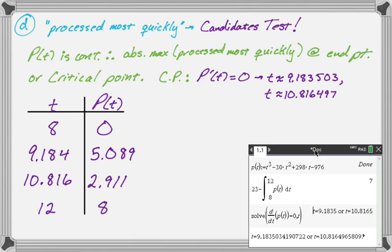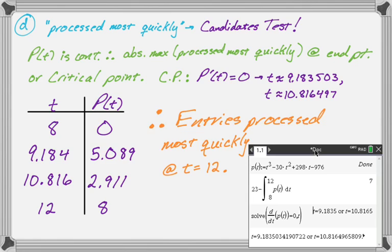So then I took these values and I just subbed them in on the calculator. I didn't screen capture that. And so the answer is the maximum in this table, right? P of t, the biggest you get from these four values is eight. So that's got to be it. So I'm going to write that down. Entries process most quickly at t equals 12. And that is the entire problem.